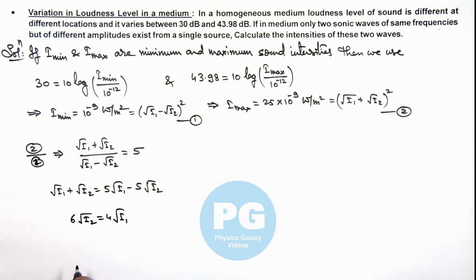In this situation, we'll be getting the value I_1 by I_2 is equal to... if you square these terms here you can see root I_1 by root I_2 is 3 by 2 so this will be 9 by 4. If we have got I_1 by I_2 is 9 by 4...